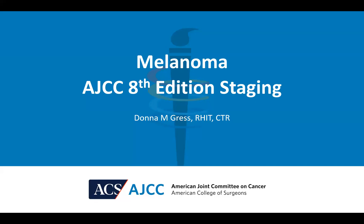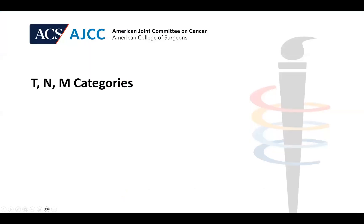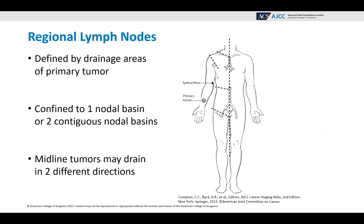I'm Donna Gress, and our topic is Melanoma AJCC 8th edition staging. First we're going to talk about the T, N, and M categories. The regional lymph nodes are defined by drainage areas of the primary tumor. This can be confined to one nodal basin or two contiguous nodal basins, and midline tumors may drain in two different directions.